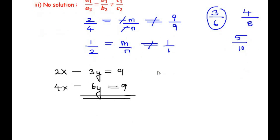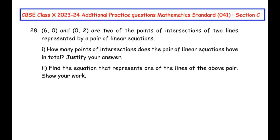To summarize: we found values of m and n for a unique solution; infinitely many solutions was impossible to satisfy; and for no solution we chose m as 3 and n as 6. Now let us move on to the next OR question, which also belongs to the pair of linear equations in two variables chapter.